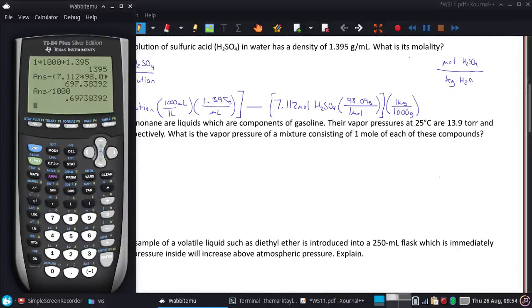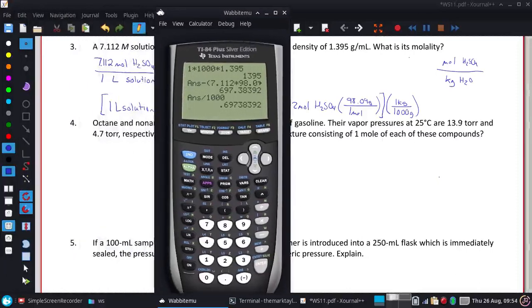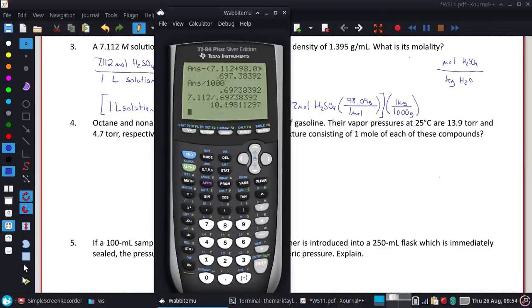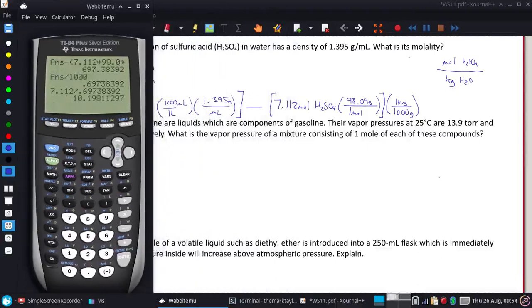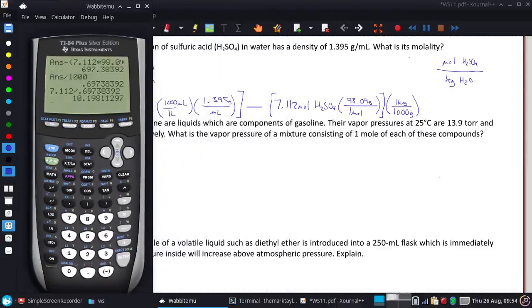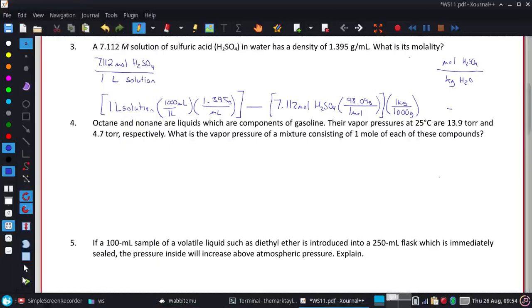All right, so to get the molality, all I'm going to do is take that initial amount of moles, that 7.112, and divide it by that mass in kilograms. And I get that the molality is 10 points, and I do have four significant figures, so 10.20. I'll put that down here.